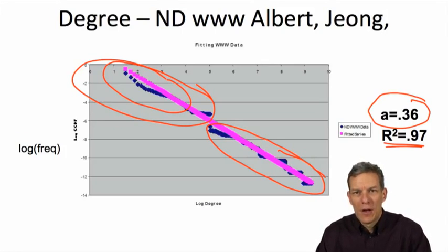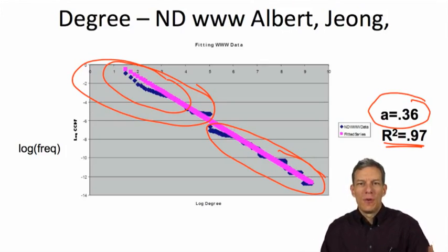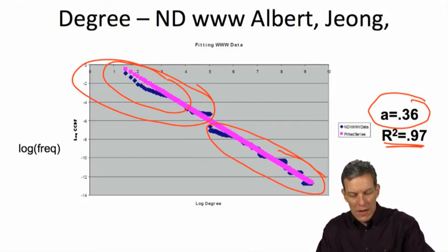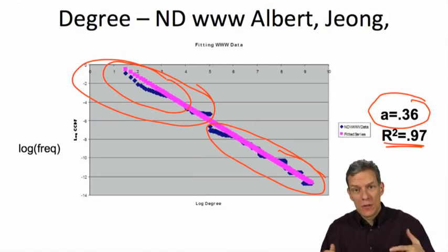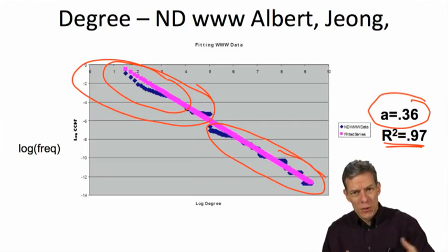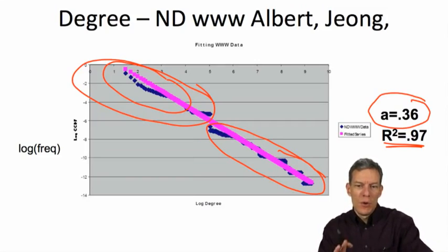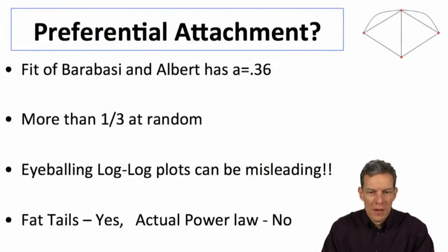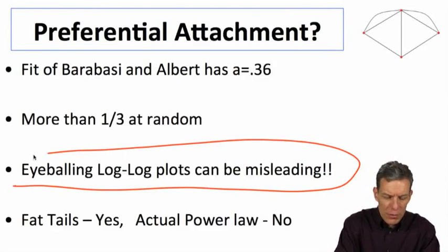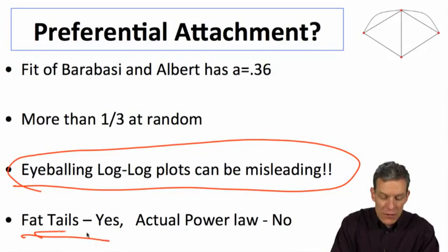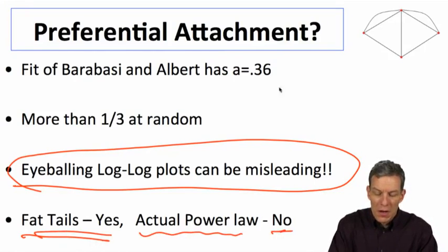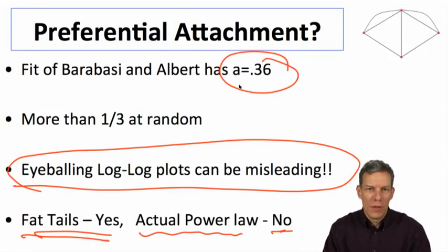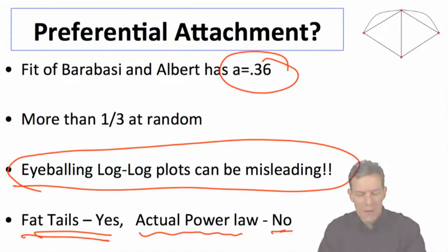There might be other things going on where pages accumulate some of their links through some other process other than preferential attachment, and that's an important caveat to these things. So when we understand power laws, one thing we should understand is there are fat tails, but not necessarily purely linear relationships. And when you fit them, it's very difficult to let your eyes do things in a log-log plot. You can get a very different distribution if you're careful about it statistically. Just to emphasize that eyeballing log-log plots can be misleading. So fat tails, yes. An actual power distribution, no. Here we're finding about two-thirds of a power distribution and one-third of uniform at random seems to be a better fit of this.